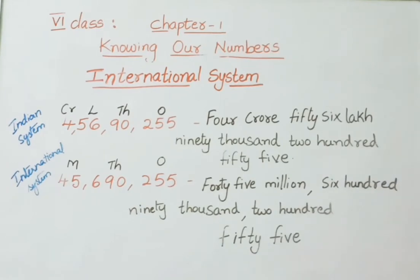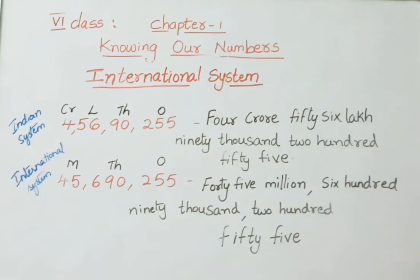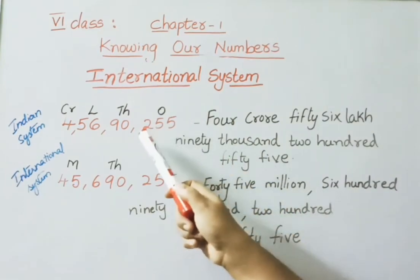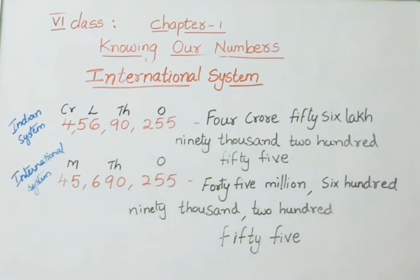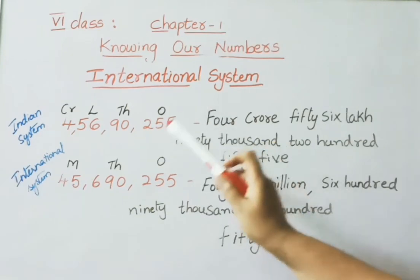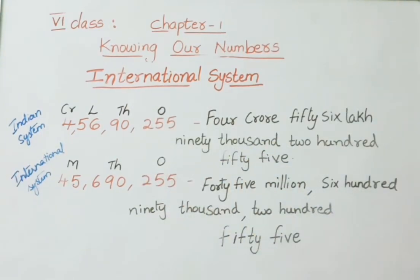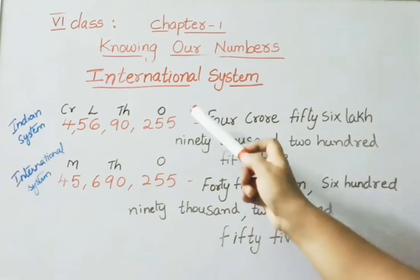In the International system we use commas in the word form to separate periods, but in the Indian system no comma is needed in the word form. The key difference: in the Indian system we separate the first three digits then two digits at a time, whereas in the International system we always separate three digits at a time. Whenever a number is given, first separate by commas for each system, then write down the periods — this makes reading and writing much easier.